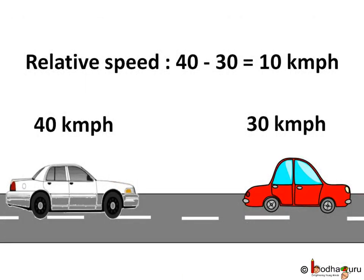So motion and rest of an object depends upon the observer. Say the white car is moving at 40 km per hour and the red car, which is 20 km ahead of the white car, is moving at 30 km per hour. As both cars are going in the same direction and the white car's speed is more, the white car would catch up eventually. 40 minus 30 equals 10 km per hour, which is the relative speed of the white car with respect to the red car. This means if someone from the red car watches the white car, it would seem like the white car is moving at 10 km per hour.